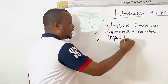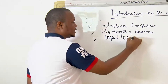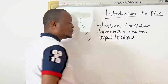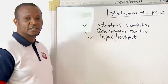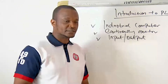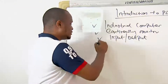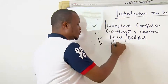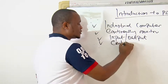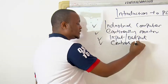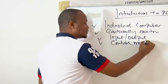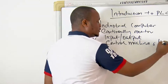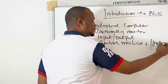We have outputs and inputs connected to the PLC, which we are going to be looking at in a later lesson. At the end of the day, it controls machines or industrial processes.